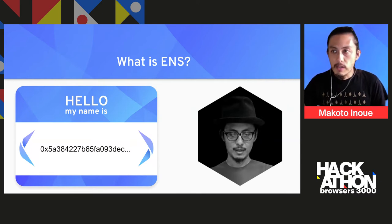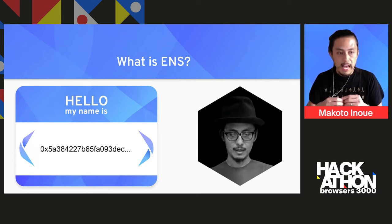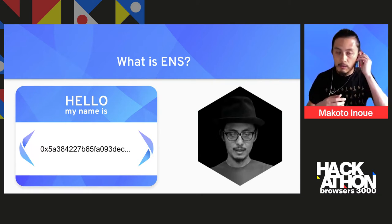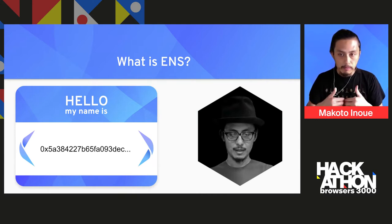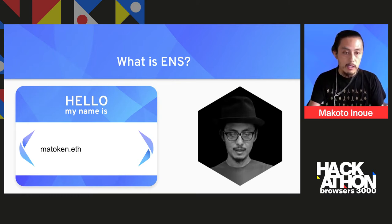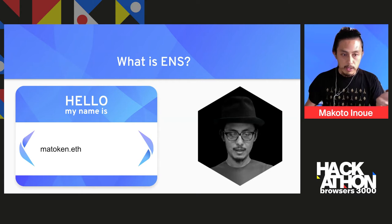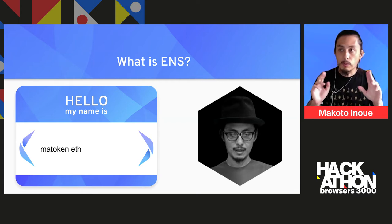If you have any cryptocurrency — in this case an Ethereum wallet — you usually have this kind of hexadecimal address which you use to send or receive cryptocurrencies, and usually this is quite hard to remember or even tell to other people. So what we offer is a very simple naming service. For example, matokun.eth is my ENS name, so if you want to send me some ETH or any ERC-20 tokens, you can send to matokun.eth. That is the very gist of what ENS does.